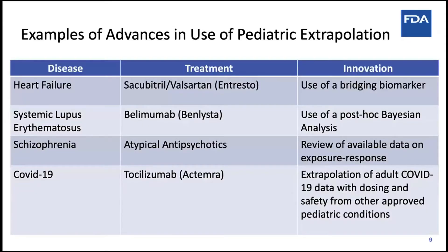This slide presents recent examples of advances in pediatric extrapolation. One recent approval — Sacubitril-Valsartan for heart failure, trade name Entresto — used a bridging biomarker, NT-ProBNP, which through exposure-response analysis between adult heart failure patients with dilated cardiomyopathy and pediatric dilated cardiomyopathy patients, allowed bridging of efficacy in adults using this biomarker in a controlled pediatric trial. This led to approval of Entresto in all patients with pediatric heart failure.